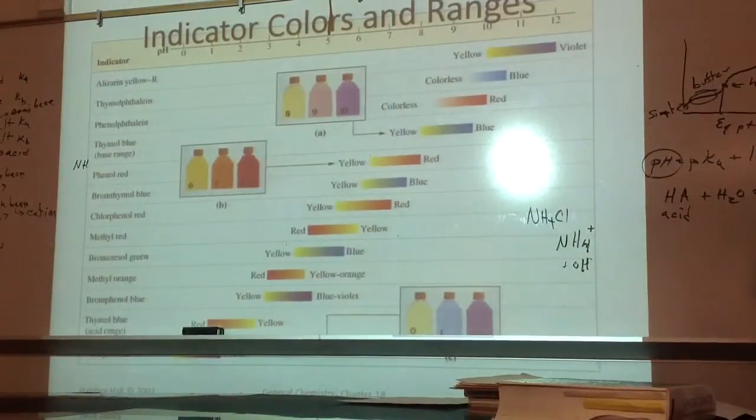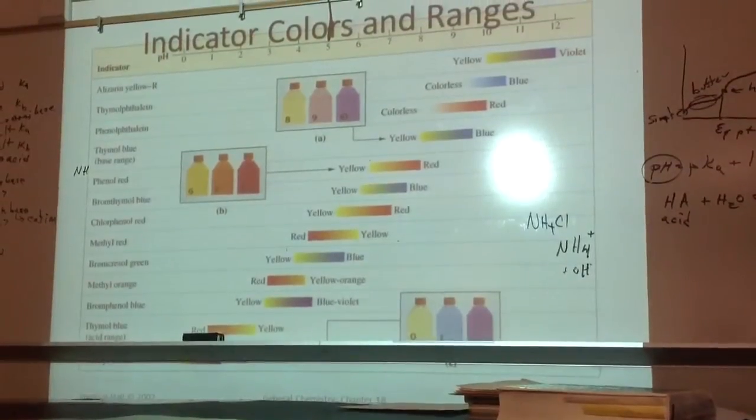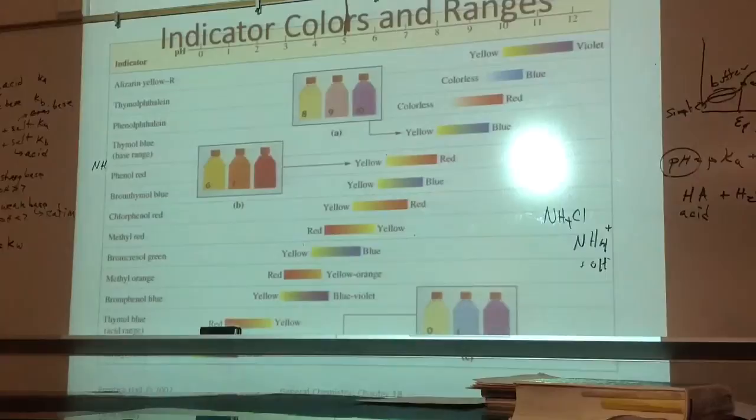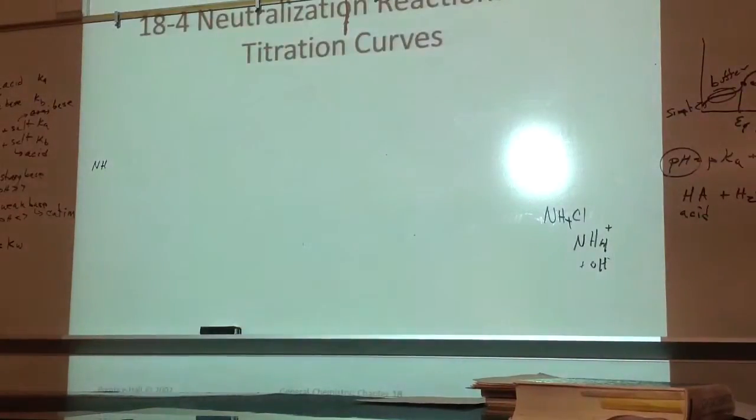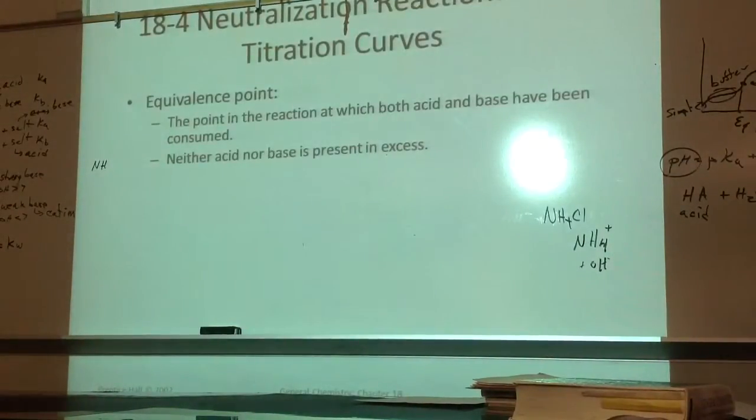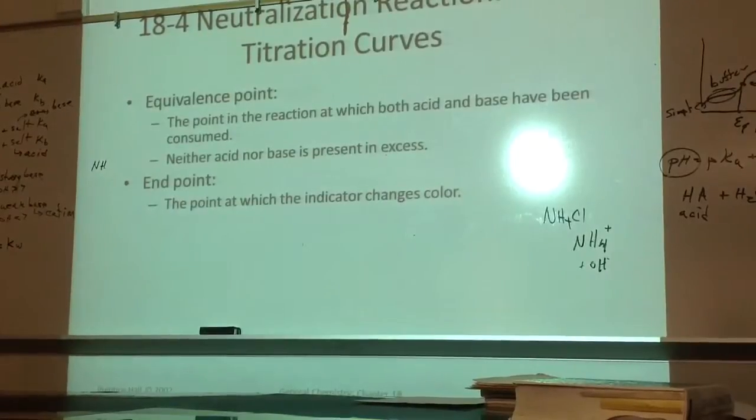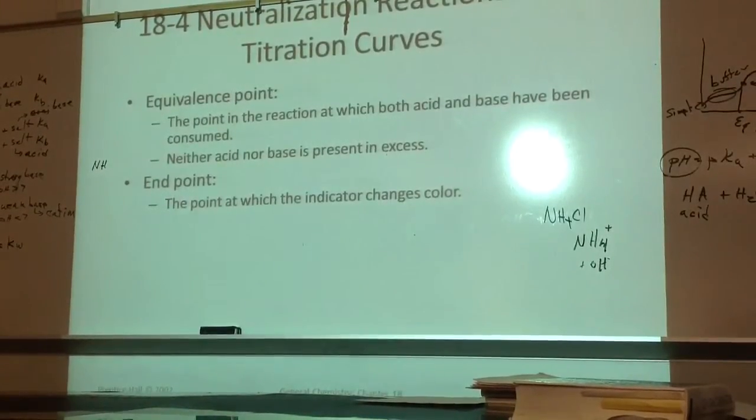Here are different indicators, and their color changes at different ranges. We're not going to learn any of that, but I want you to get to the next slide. Equivalence point, both acid and base consumed, and neither acid nor base are present in excess. In other words, the equivalence point, the difference between that, and here he does the end point, the point at which the indicator changes color. If you choose the right indicator, you're in good shape.